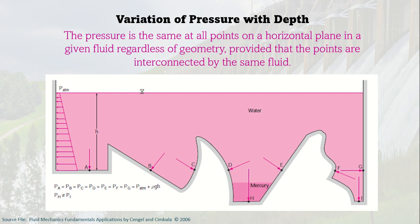It does not matter whether the geometry is different — as long as they are at the same depth and interconnected by the same fluid, they have the same pressure. However, the pressure at H is not equal to I because the fluid in H is mercury, while the other contains water. So though they are at the same level, since H is mercury and I is water, they are not the same.